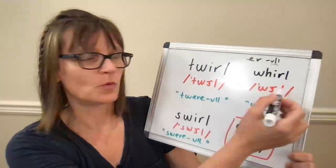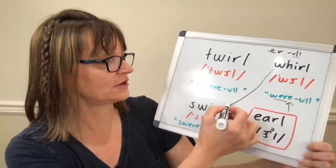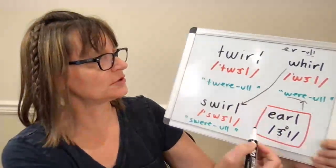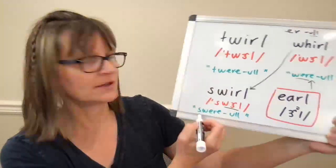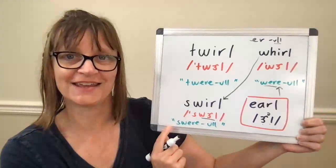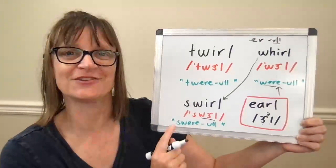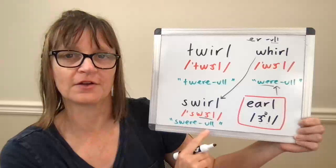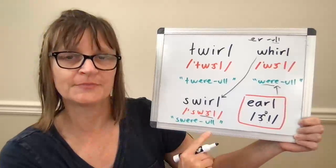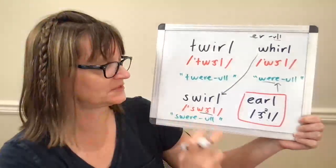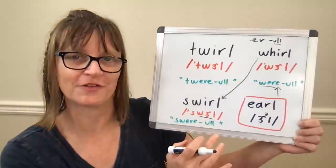Once I can say whirl, then I can go to swirl or twirl because they both have that same whirl sound. In swirl, I'm just adding an S sound to my whirl. So trying ul, earl, whirl, swirl, building it up sound by sound, figuring out where you find those challenges.